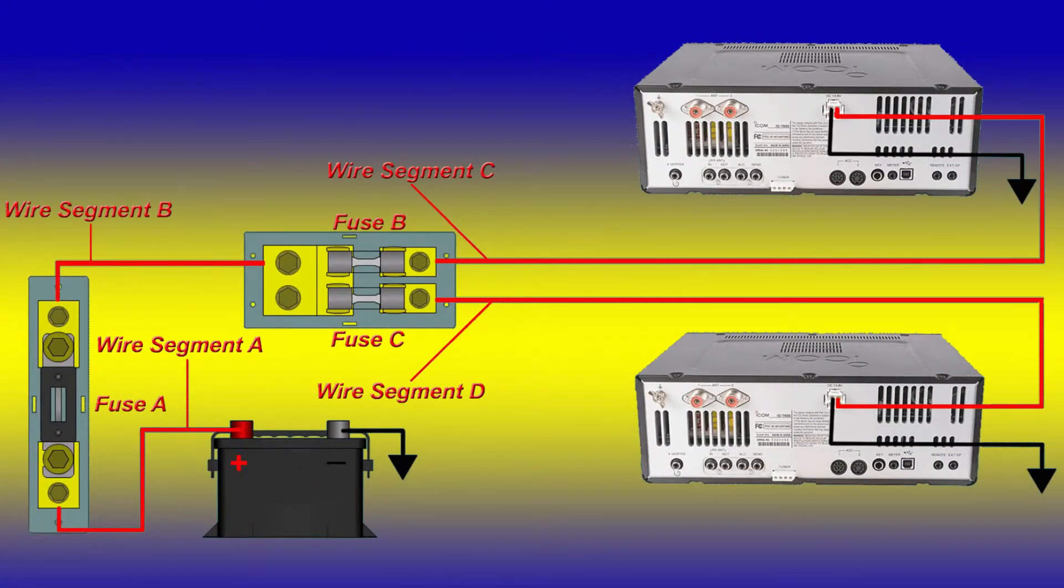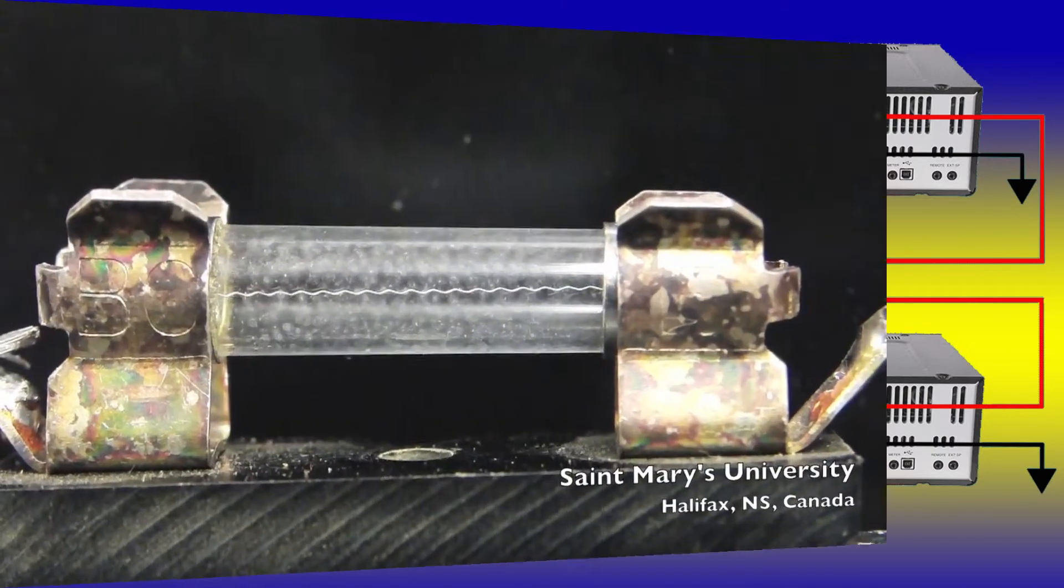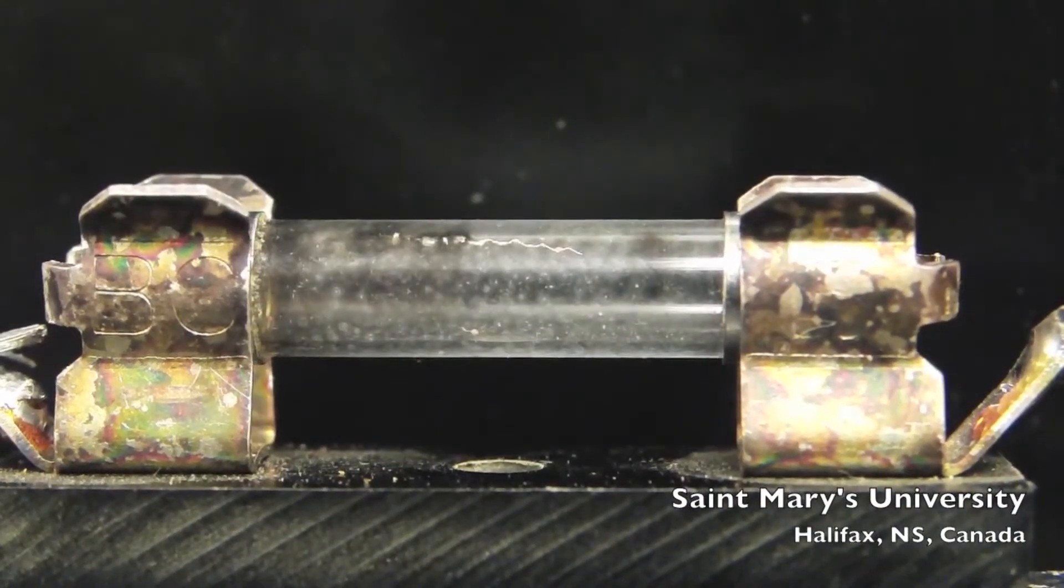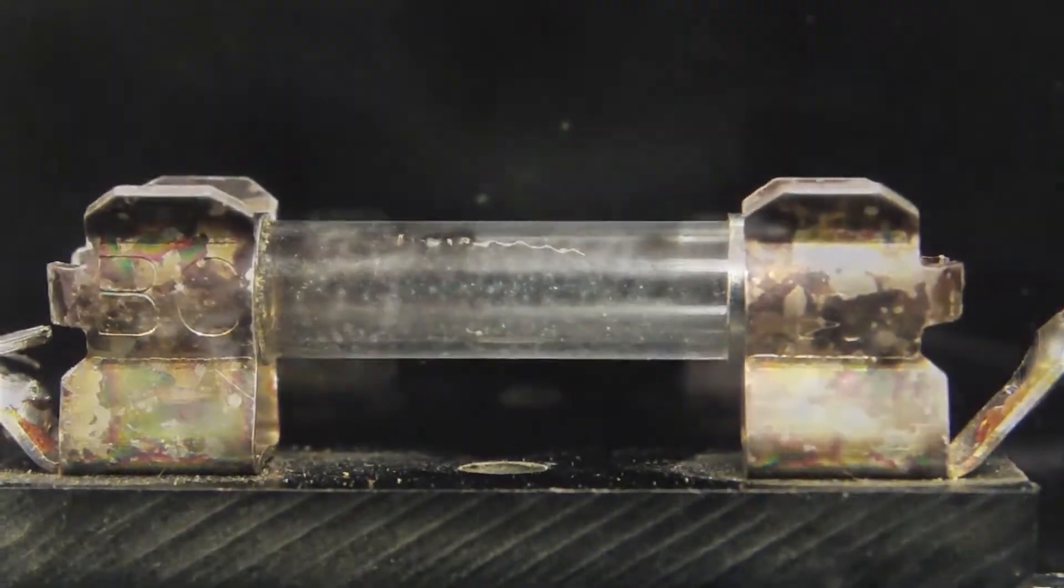Now this diagram is a little bit more complicated. As you can see, wire segment A is used to deliver power to the fuse within 18 inches of the battery. Wire A is also large enough to power two rigs. Fuse A must be rated to protect wire B, and fuse B protects wire C, and fuse C protects wire D. And thus, both rigs are protected.